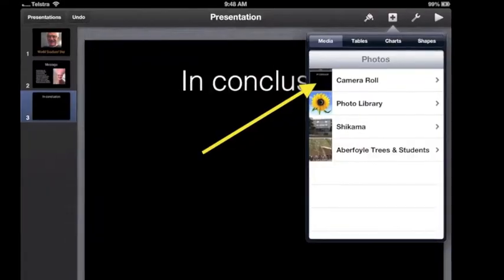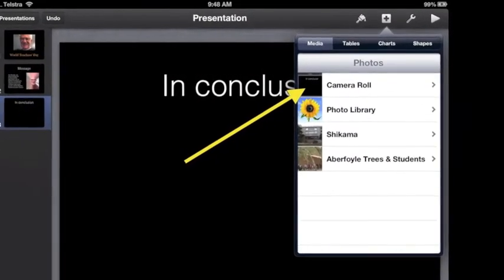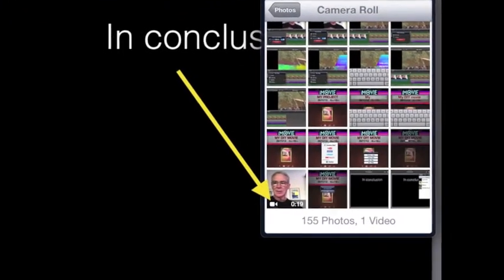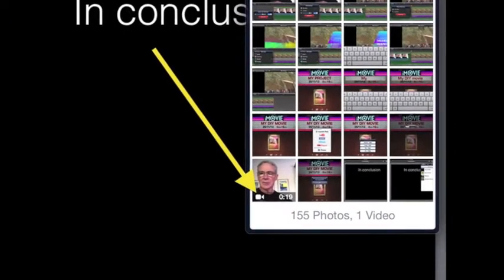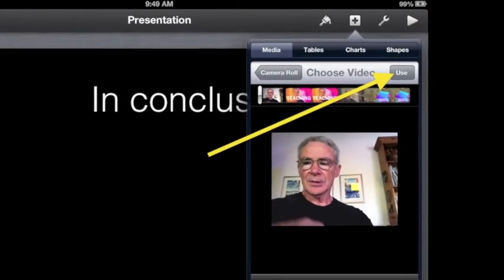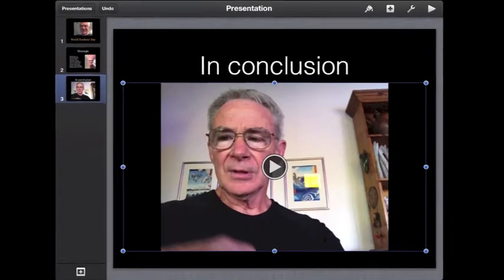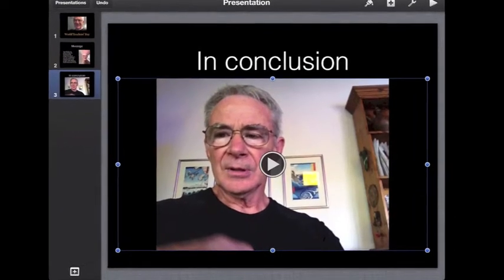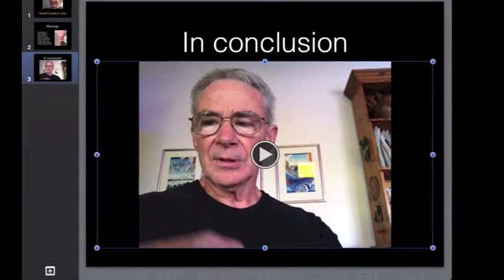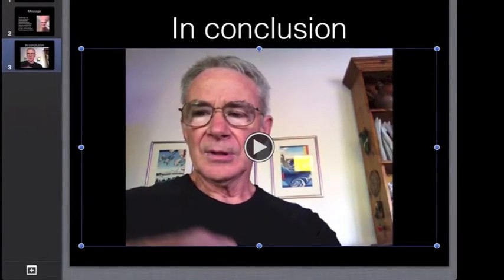Tap Keynote to return to slide 3. Tap the plus to access media, and then tap camera roll. Your movie will be the one with a tiny movie camera in the bottom left corner. Tap this movie to see a choose video window. Tap use to get the movie into your presentation. You can drag the movie into the center of the slide so that a yellow positioning line appears. You can drag the blue corner handle to resize the movie.